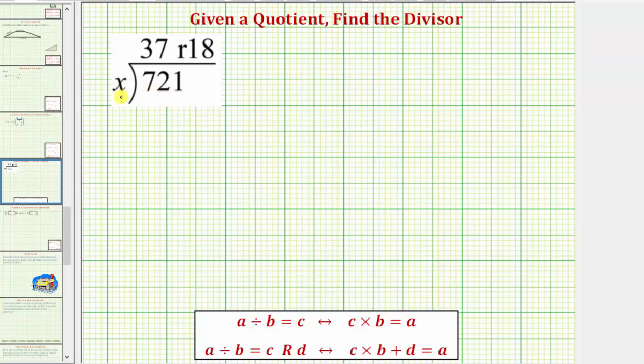Here we're given 721 divided by x equals 37 with a remainder of 18. Our goal here is to find the value of x which is the divisor of the quotient.